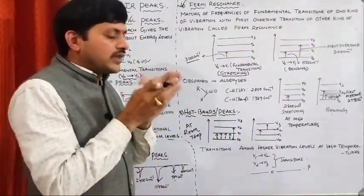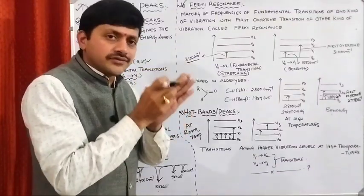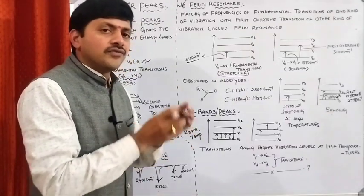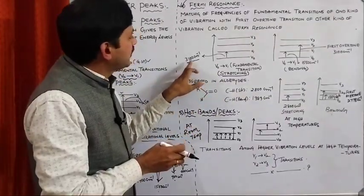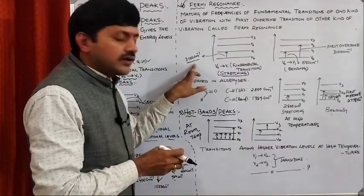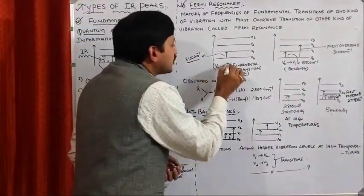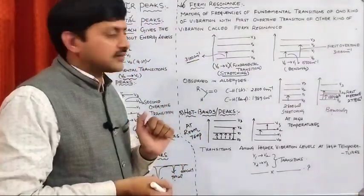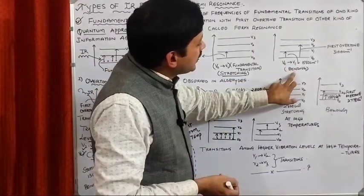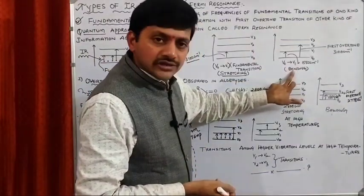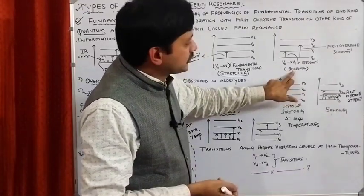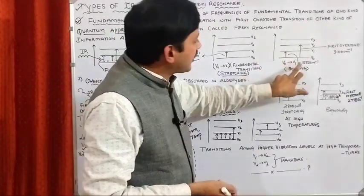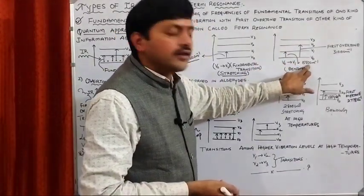In the second case, we observe bending vibrations. Because of the bending vibrations, we observe a fundamental transition. The fundamental transition value is 1550 cm⁻¹. V0 to V1 is a fundamental transition, and V0 to V2 is the first overtone transition.